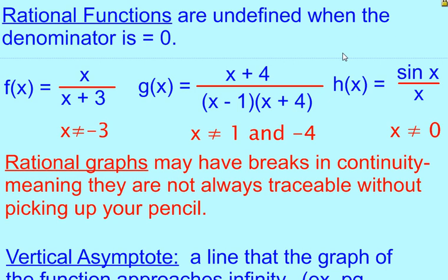A rational function is a function who has a variable in the denominator. So it's written as a fraction, you'll see here the examples of f of x, g of x, and h of x. What happens is, we're going to be looking at these functions, and what's special about them is that there are certain values that don't work for these functions.